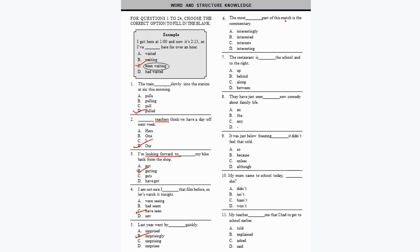Question 6: 'The most dash part of this match is the commentary.' You need the correct adjective: 'The most interesting part of this match is the commentary.' Question 7: 'The restaurant is dash the school and to the right.' You need the correct preposition: 'The restaurant is behind the school.'